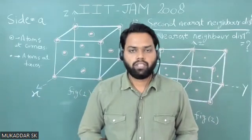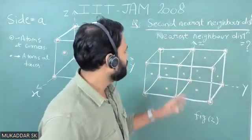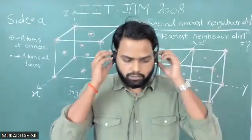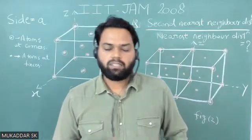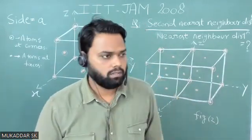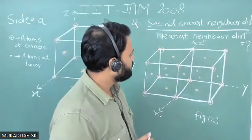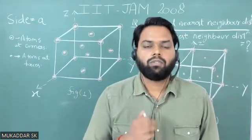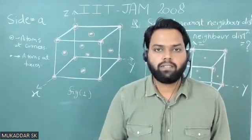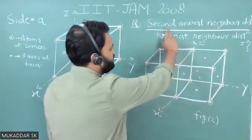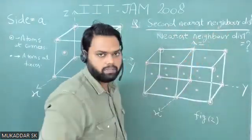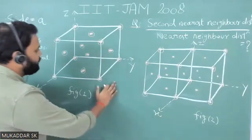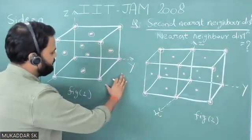Hello students, today we are going to discuss a problem from the IIT JAM 2008 examination. This question is from solid state physics, specifically the subsection of crystallography. The question involves the FCC lattice — that is, the face-centered cubic lattice — and we have to find the ratio between the second nearest neighbor distance to the nearest neighbor distance.